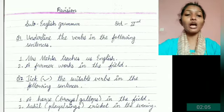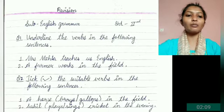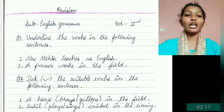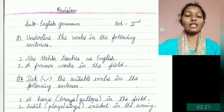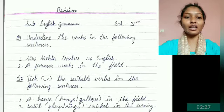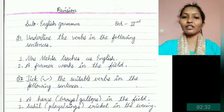Underline the verbs in the following sentences — give a bracket and tick it. Number 1: A horse gallops in the field. What is the horse doing? It is galloping, so the verb is 'gallops'. Number 2: He is playing cricket in the evening. What is he doing? He is playing, so the verb is 'playing'. Tick it.